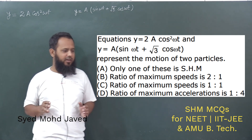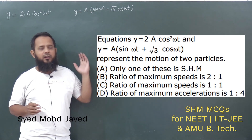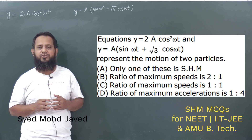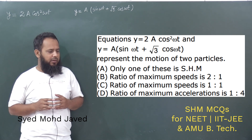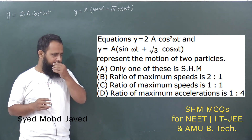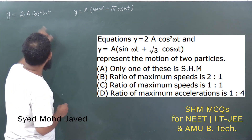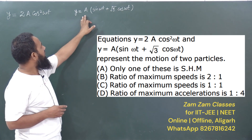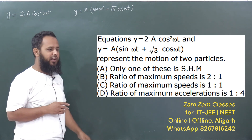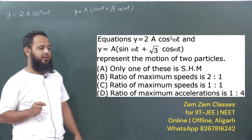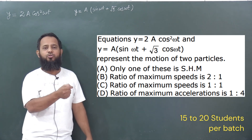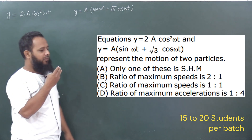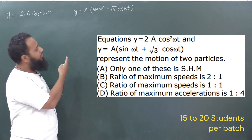Dear students, welcome. We are going to solve this problem of Simple Harmonic Motion. In sheet one, there is a question: equation y = 2a cos²(ωt) and y = a sin(ωt) + √3 cos(ωt) represent the motion of two particles, where displacement is given in terms of trigonometric ratios and amplitude a.